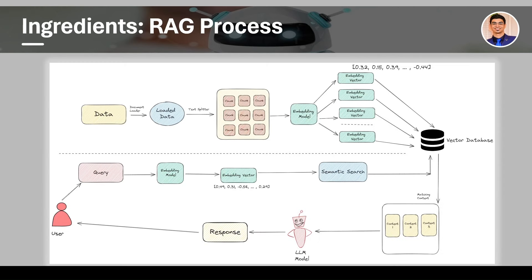Let's understand the RAG process and how this entire pipeline works, which we are going to use in our application. It starts with the data loader, using which we load our datasets — in our case, CSV files. Once the data load operation is completed, we transform the data into various chunks, which are smaller components of the dataset. These chunks are passed through an embedding model, which encodes the textual information in our data into numerical vectors — a collection of different numerical values used by our underlying algorithm. These embedding vectors are then stored in a vector database.